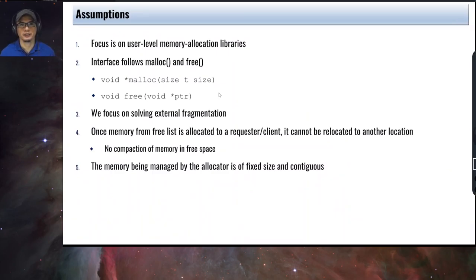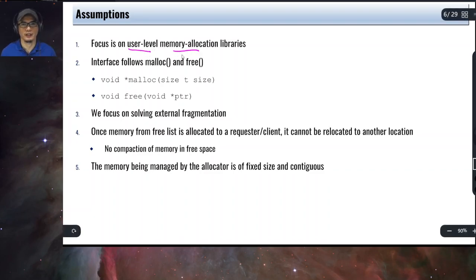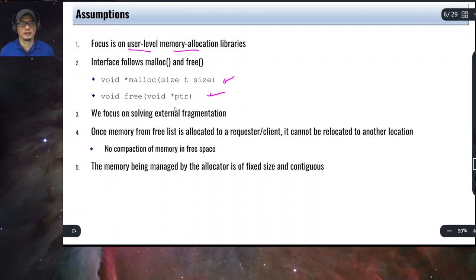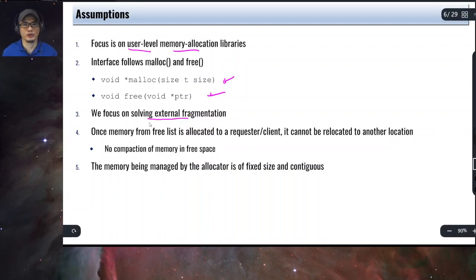In the succeeding discussions, we need to make some assumptions to understand the different mechanisms. We are going to focus on user-level memory allocation libraries, meaning implementations for malloc and free. Note that in an operating system, especially in the kernel, it has its own memory allocation strategies as well, but in this discussion we focus on the implementation of malloc and free. The interfaces are: malloc for allocating memory, and free for freeing allocated memory. Our priority is to solve external fragmentation.